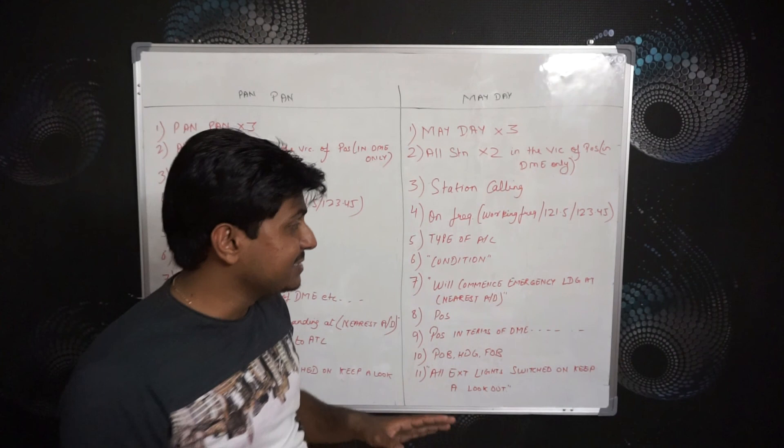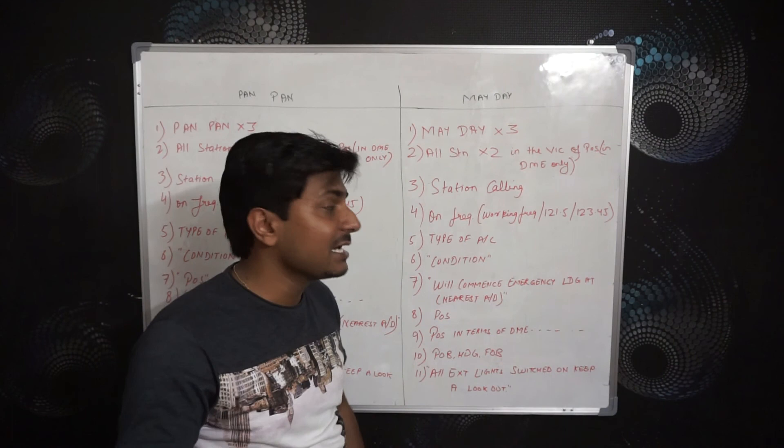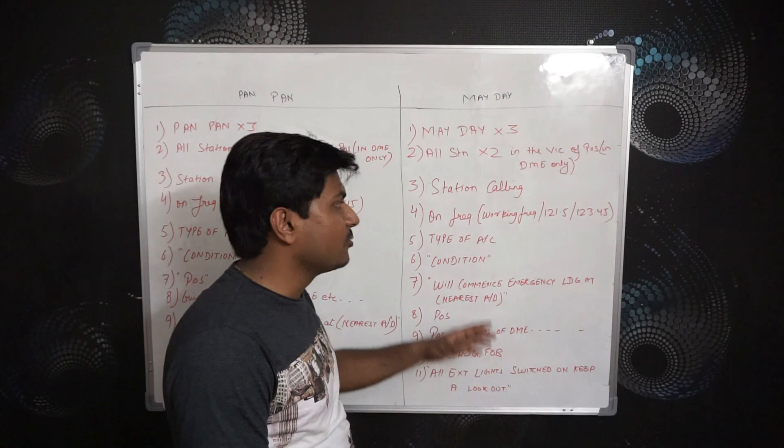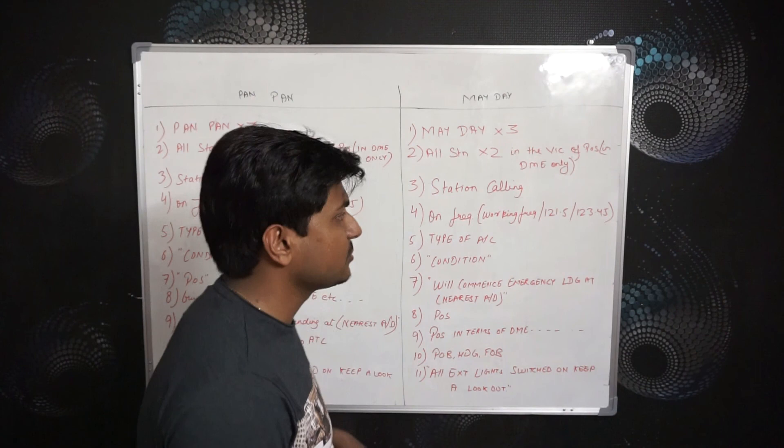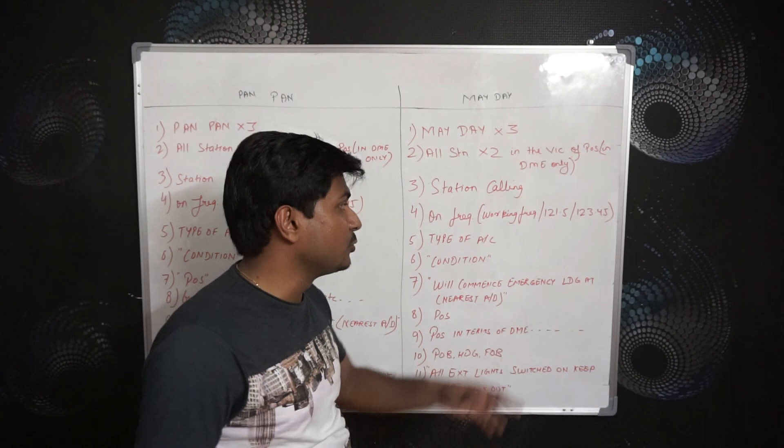This whole message you have to transmit again on 121.5, and again on 123.45. So it is quite a long transmission, but there is a way to make it short. You write 'read back on 121.5' after the first completion, and then 'read back on 123.45.' You have to transmit three times — on the three frequencies — but you don't have to write the full message three times on your exam answer sheet.